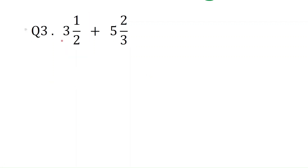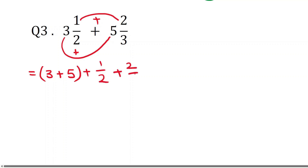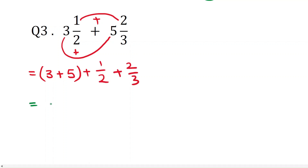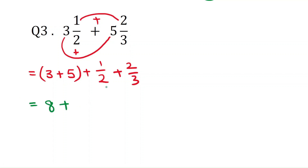While adding mixed numbers, first add the whole numbers and later add the fractions. That will be 3 plus 5 plus 1/2 plus 2/3. Three plus five is eight. Now for the fractions, we can use the LCM method. The LCM of 2 and 3 is 6.